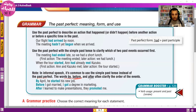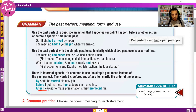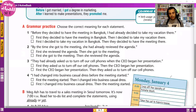Signal words like 'by,' 'before,' and 'after' help identify the sequence. For example: 'By April, he had started his new job.' 'Before I got married, I got a degree in marketing.' 'After I learned to make presentations, they promoted me.'